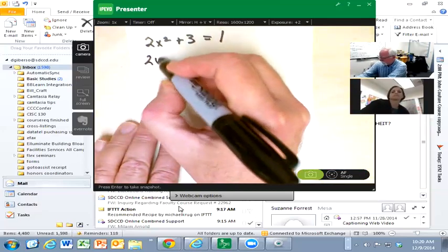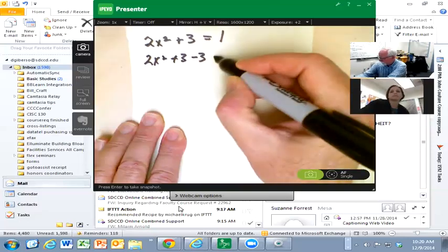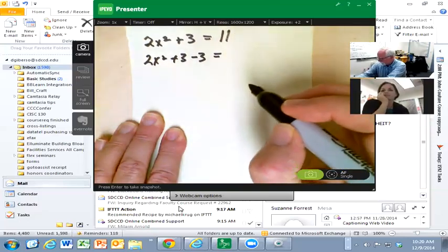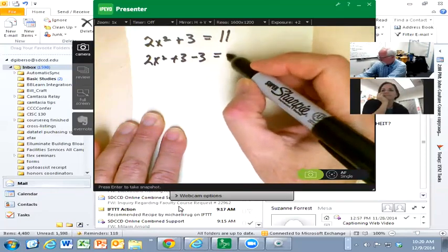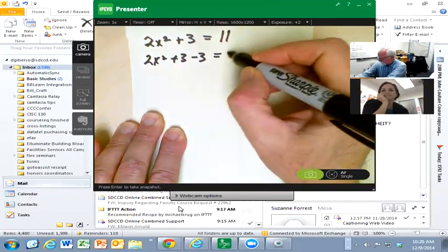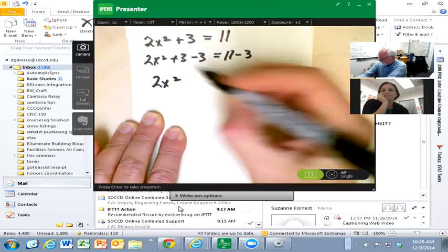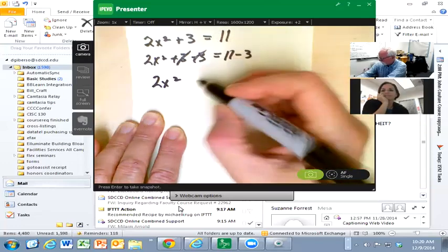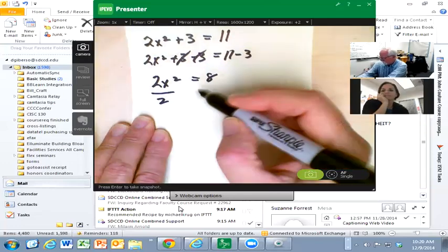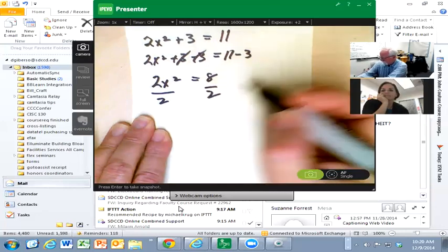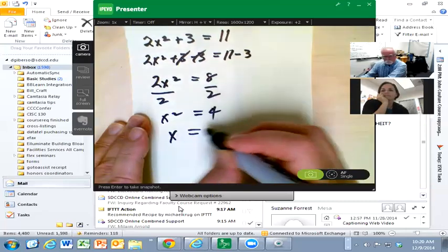Well, I can subtract 3 from both sides. It was supposed to be 11, sorry. Operator error. So, equals 11 minus 3, or 2x², 3 minus 3 cancel, equals 8. Well, then if I divide, and you get the idea. So, x² = 4, x = 2.